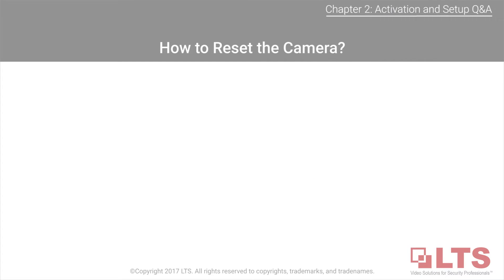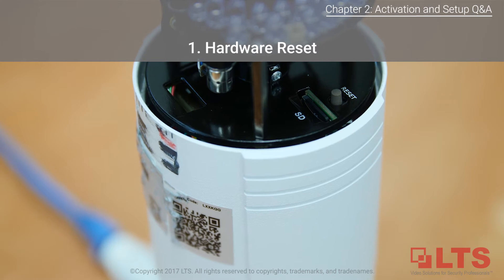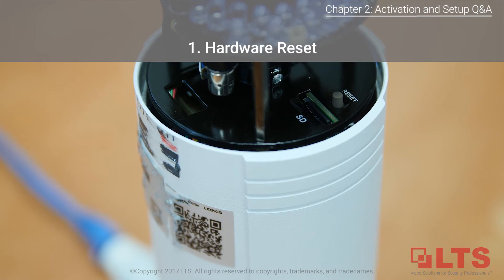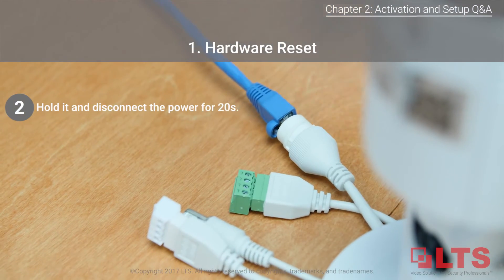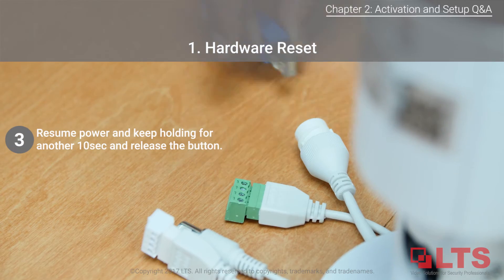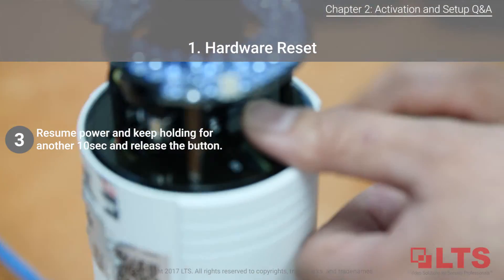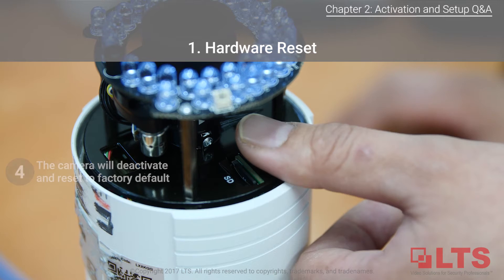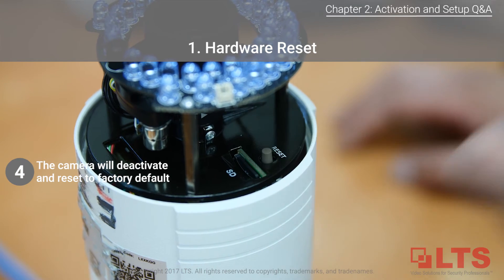How do you reset the camera? There are three ways. First is the hardware reset, which returns the camera to factory default settings. Press and hold the reset button on the camera while disconnecting the power for 20 seconds. Then reconnect the power while still holding the reset button for an additional 10 seconds, then release. The camera will be deactivated and returned to its factory default state.